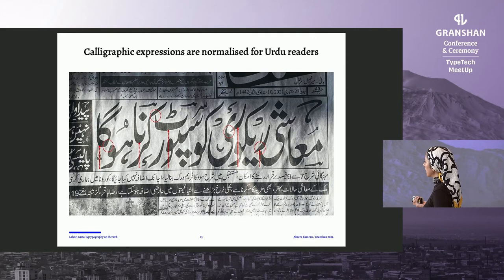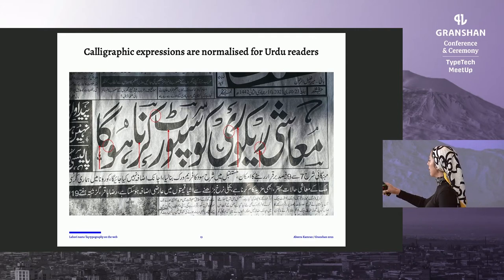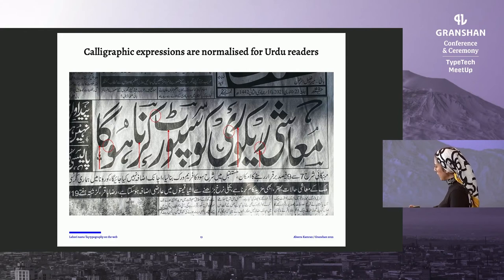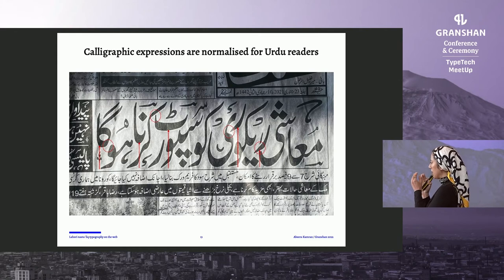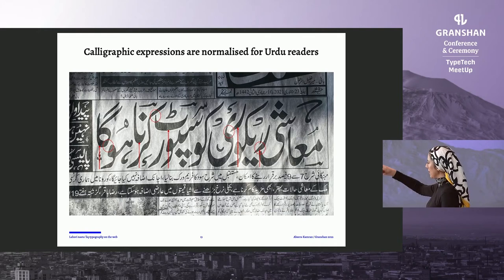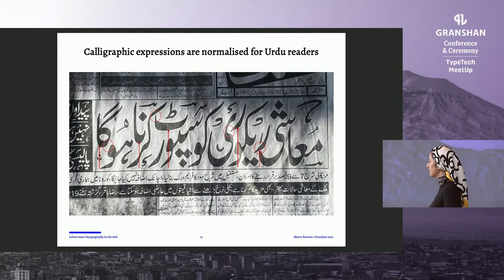Calligraphic expressions are normalized for Urdu readers. A very standard newspaper headline shows words shifting above their baseline — the arrows indicate where words have shifted — and the words are overlapping, with quite tight kerning. So any Urdu reader, in order to read this, is not just reading right to left, but also diagonally and up and down. It's a complex but intuitive way that we read.